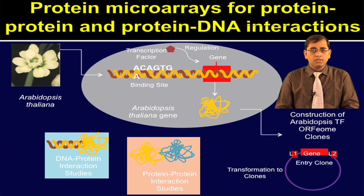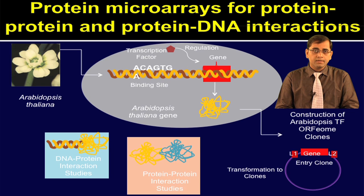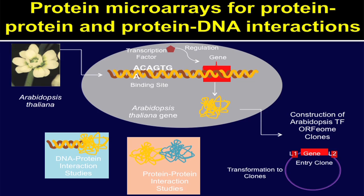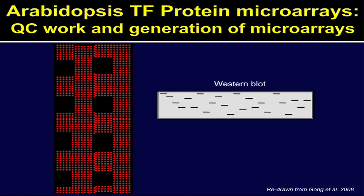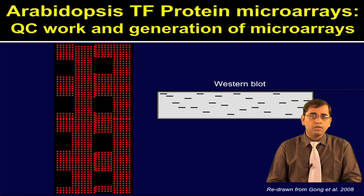From Arabidopsis, the authors generated an ORF repository of transcription factors and these clones were transformed to various types of recombinant vectors, which were further used to purify the proteins. Once the proteins are purified, they were printed on the chip surface and used for different applications including protein-protein and protein-DNA interactions. This slide shows you the Arabidopsis transcription factor protein microarrays. The left side is used as quality control check to show that all the proteins are expressing well on the chip surface.